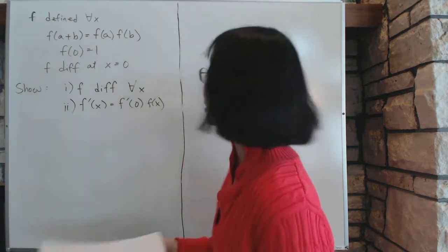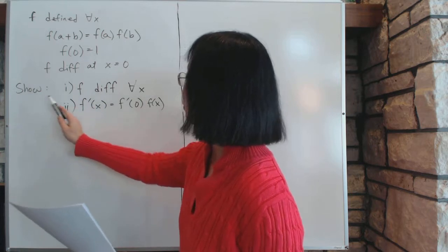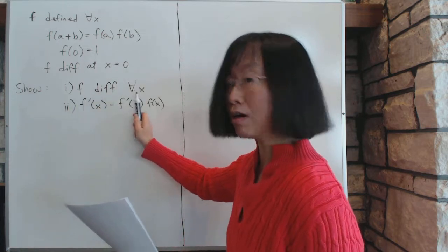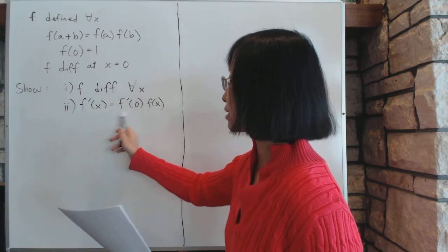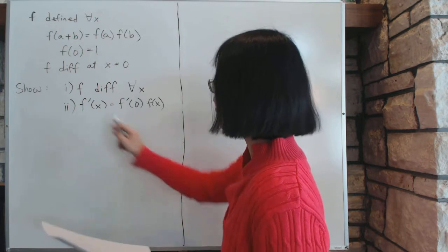Well, the exponential function comes to mind, but we don't care about that for now. What we're going to show is that f is differentiable for all x, and f'(x) equals f'(0) times f(x) at that value, whatever value it needs.